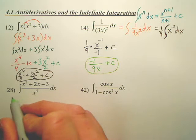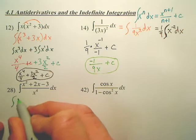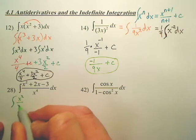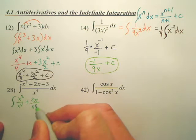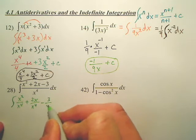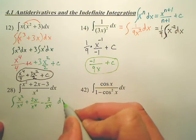Yes. I'm going to rewrite this as x squared over x to the fourth plus 2x over x to the fourth minus 3 over x to the fourth dx.